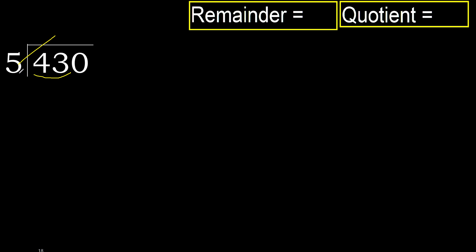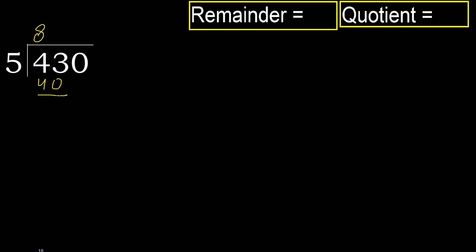5 multiplied by 9 is 45. 45 is greater, so multiply by 8 — 40 is not greater, ok. 43 minus 40 equals 3.